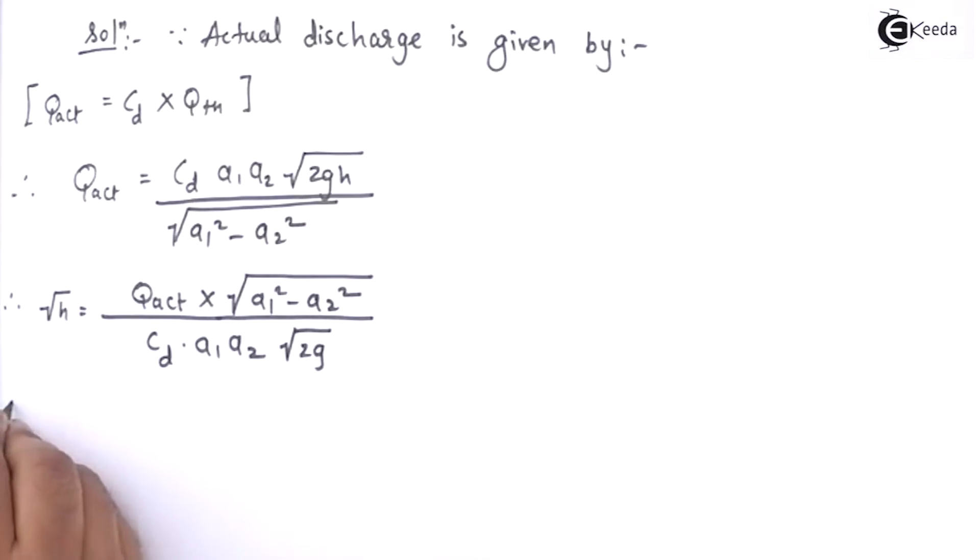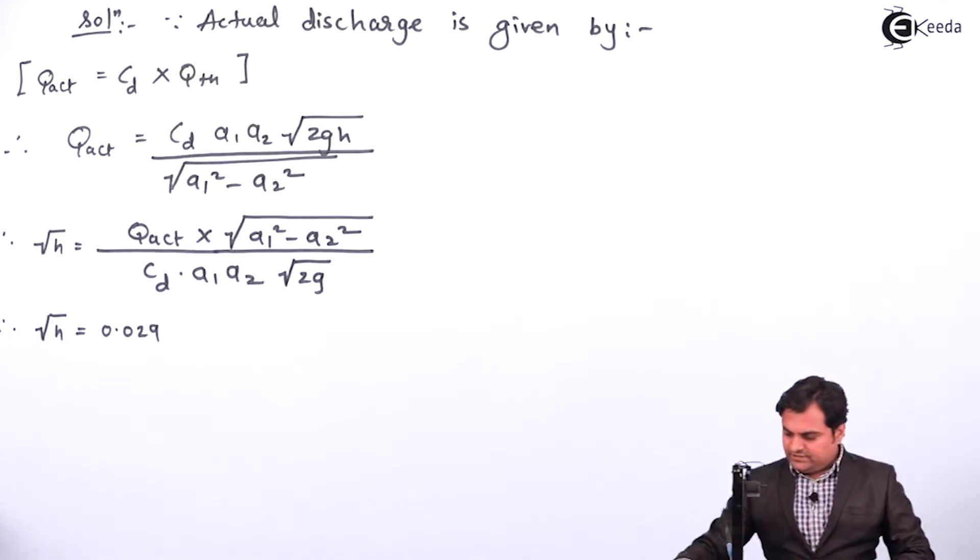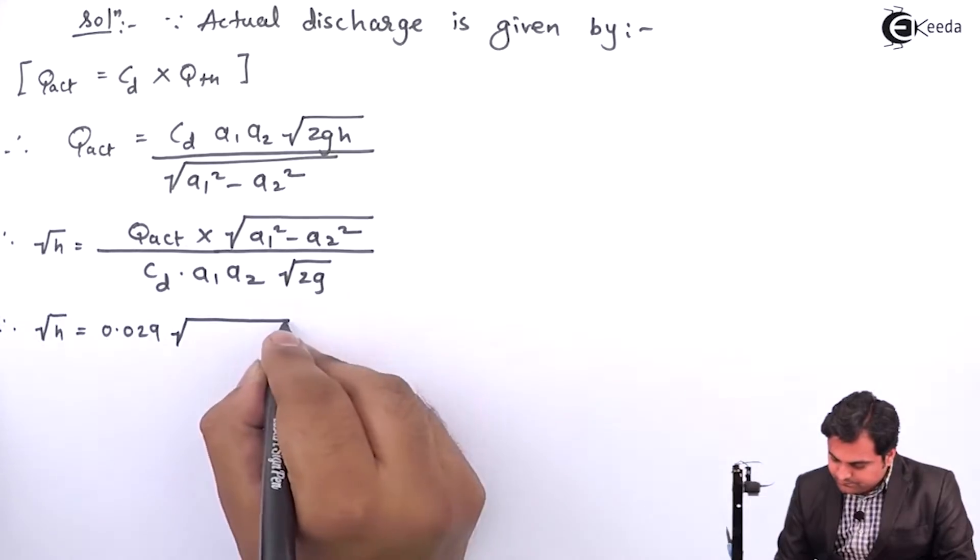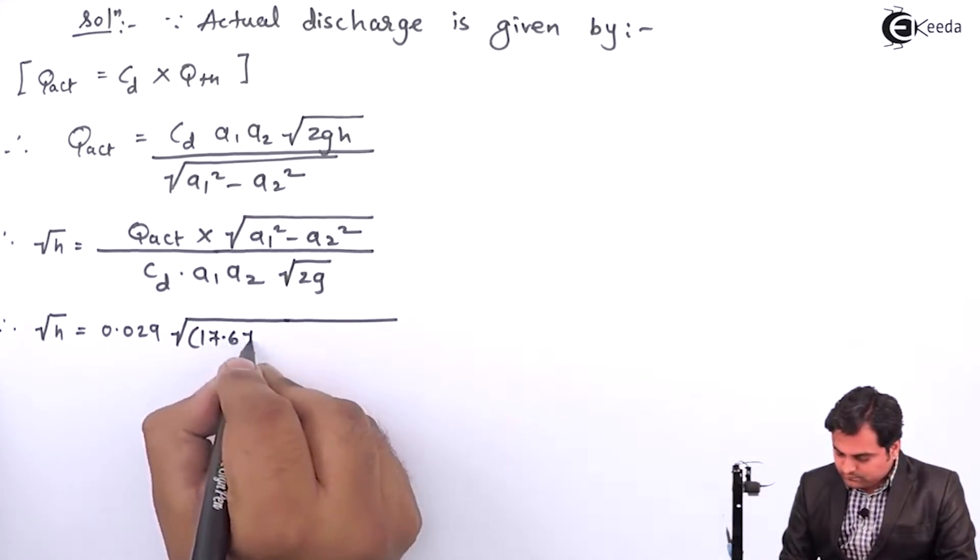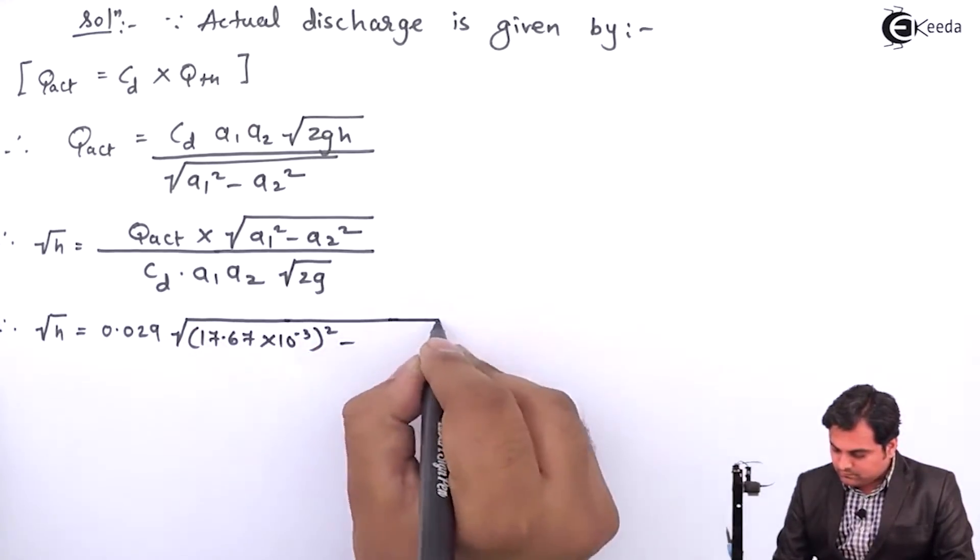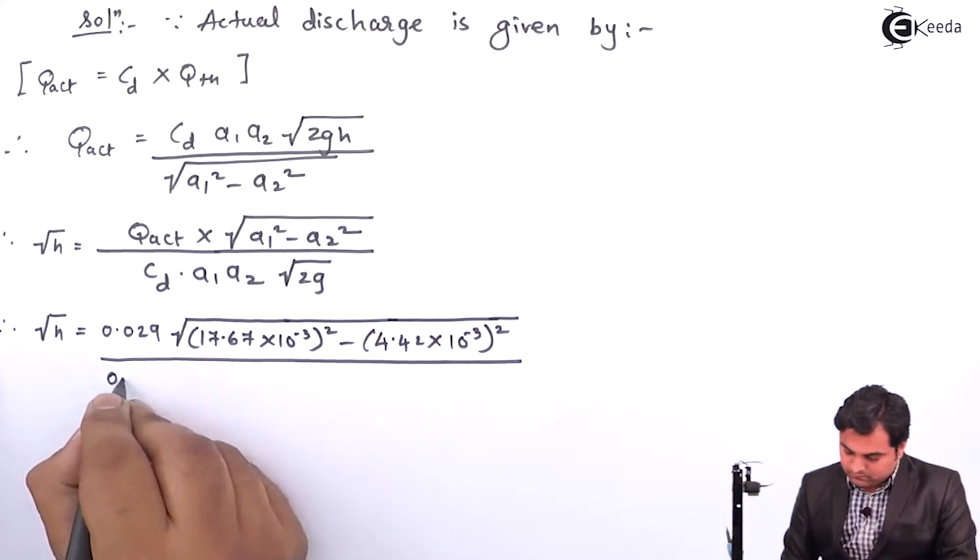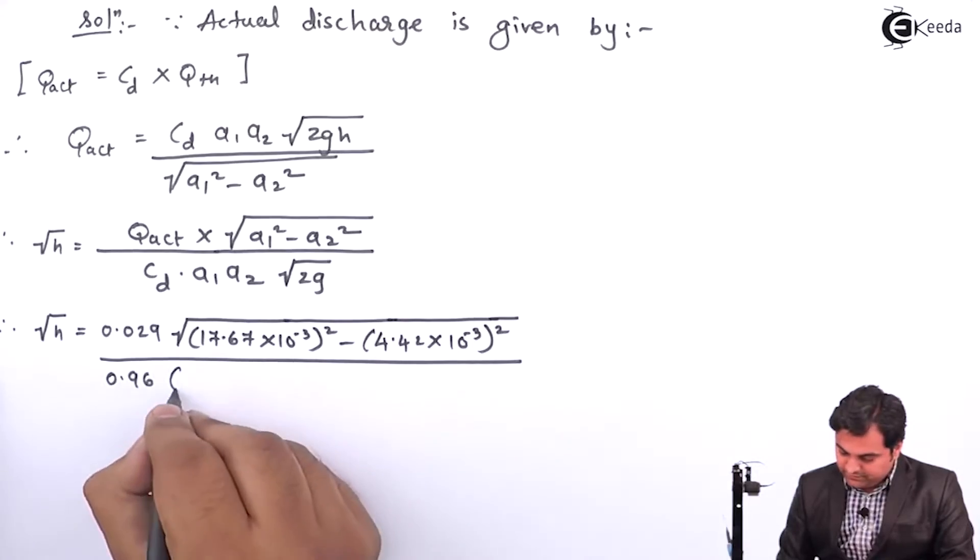Therefore, I will go on putting the values. Actual discharge is given 0.029 meter cube per second, there is no need to convert it. If they would have given in terms of liters per second, then we would have converted it into meter cube per second. Next I will be putting the values of area 1 and area 2. CD 0.96.